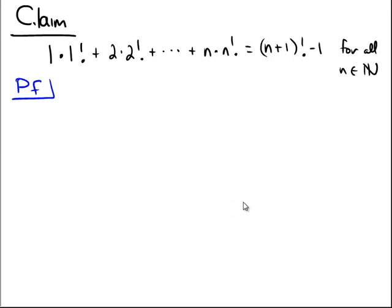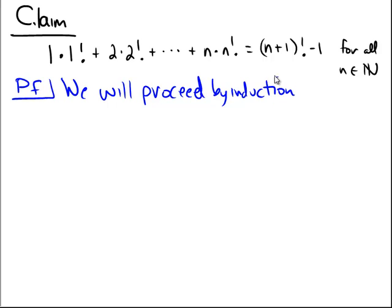Since the claim is for all natural numbers, we will proceed by induction. Let's start by telling our reader that we will proceed by induction. What's the first stage of an induction proof? Of course, it would be the base case.